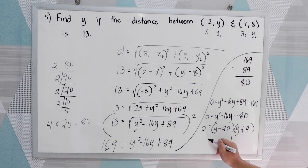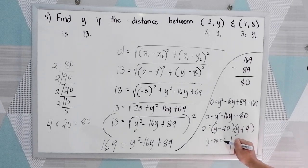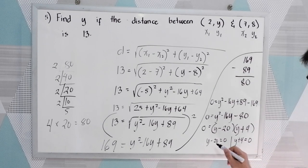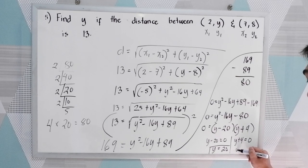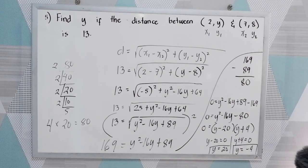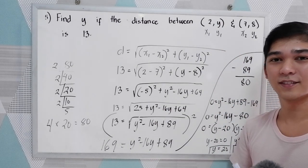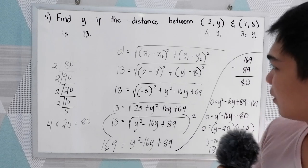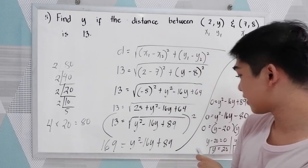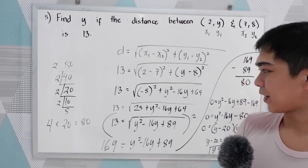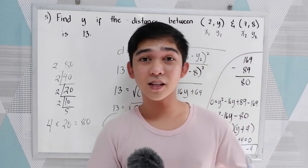So y is equal to positive 20 and the second solution is y equals negative 4. Therefore y can be positive 20 or negative 4 — those are the possible values of y. You will recall your lessons from grade 8 and grade 9 in factoring. That's the distance between two points.